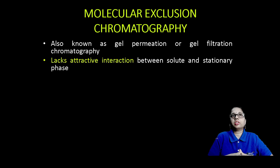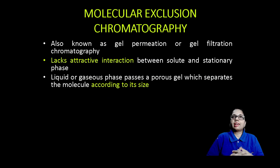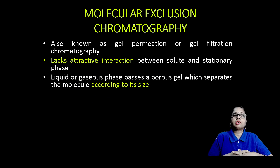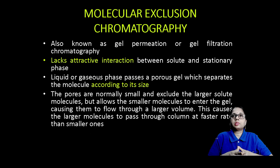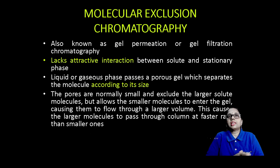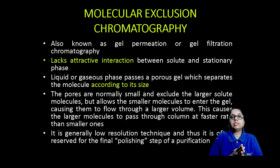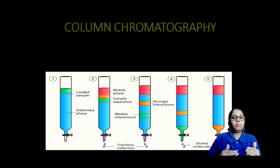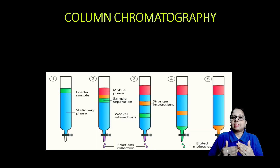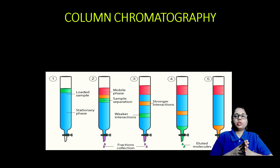Molecular exclusion chromatography, also known as gel permeation or gel filtration chromatography, lacks attractive interaction between the solute and the stationary phase. A liquid or gaseous phase passes through a porous gel which separates molecules according to their size. This causes larger molecules to pass through the column at a faster rate than smaller ones, so separation is based on the size of the molecules.